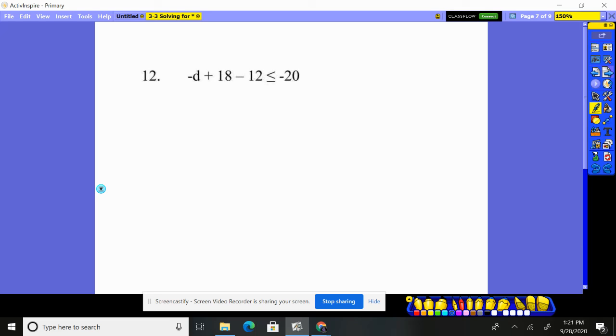Number 12. Well, let's see. We just need to put these together. So the opposite of d, 18 - 12 is 6, less than or equal to -20. I'm going to go ahead and move my 6 over. The opposite of d is how that's read. It's not really read negative d, but that's okay if you do.